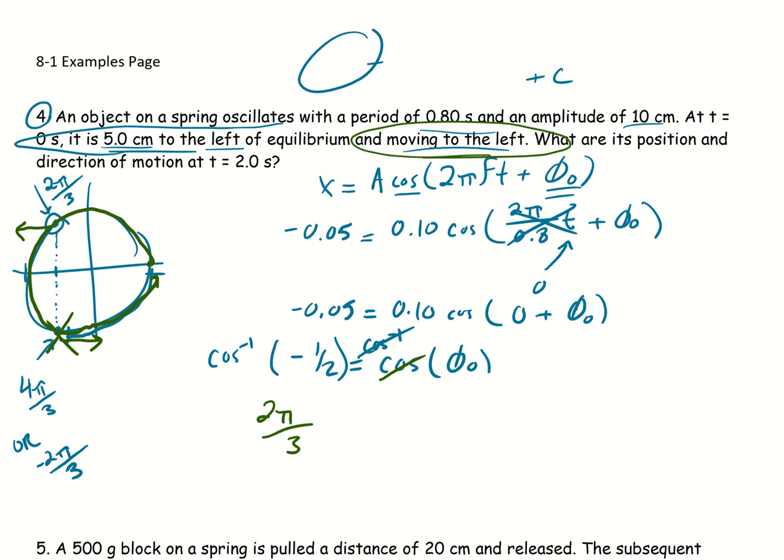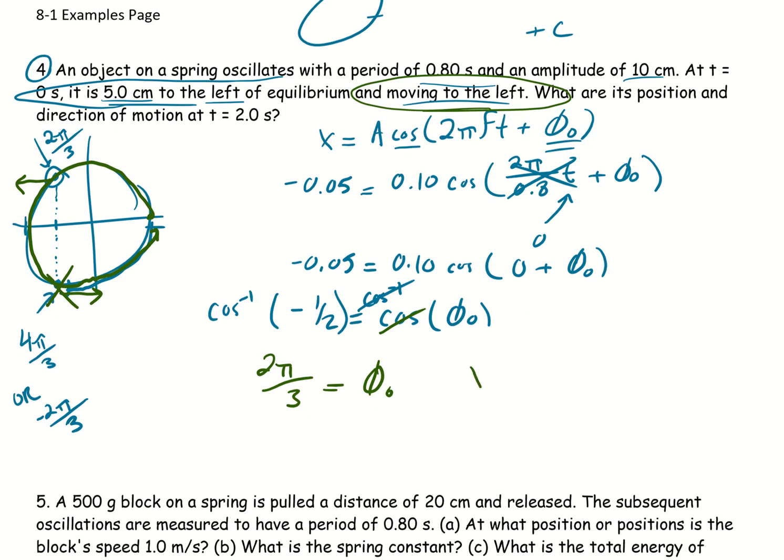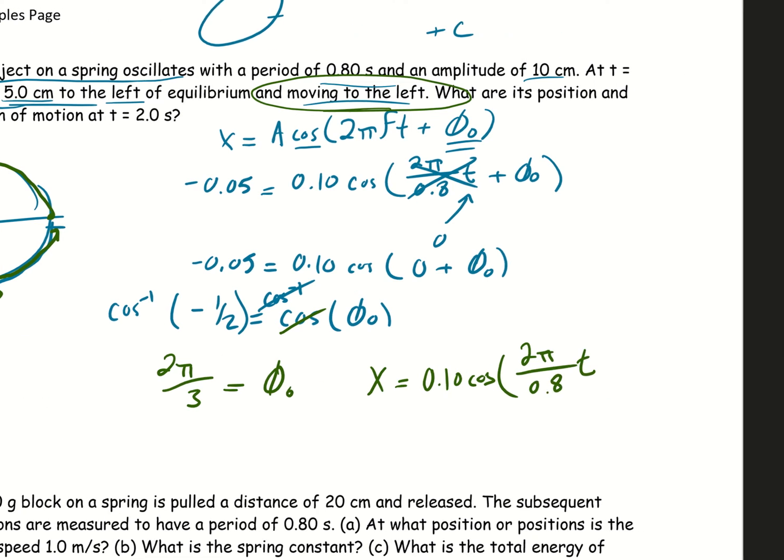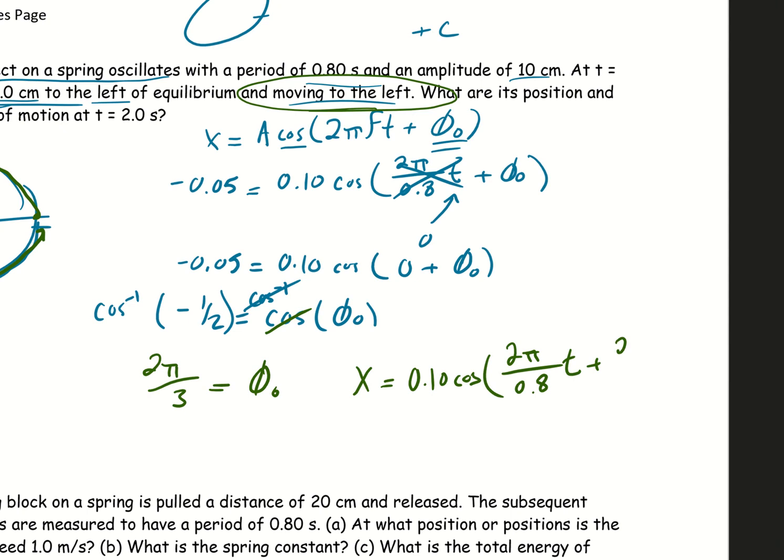So when I evaluate that, again, that's the tricky part, but that tells me my phase constant is then 2π over 3, and now I'm set, now I can actually do what I need to do. So when I come back and I write my whole function, x equals, I'm going to go ahead and plug in the amplitude of 0.10, cosine of, I'm going to plug in 2π over the period of 0.8, I'm going to leave my term of t generic in there, and then I'm going to plug in plus 2π over 3, because now I know that that's my phase constant. And so this is the function that will allow me to actually work with this.